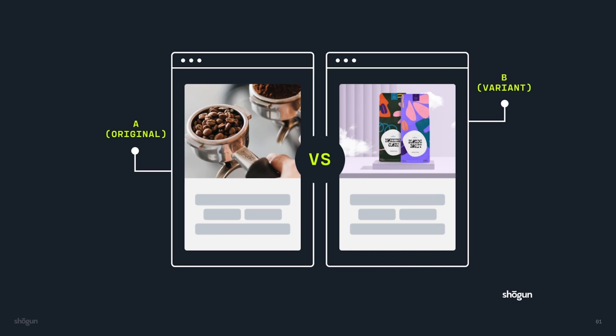It sounds simple, right? Because it is. And without A/B testing, you're basically guessing what works best for your store. But with it, you can make data-driven decisions to optimize your site for more revenue. A/B testing can help tackle a whole host of obstacles that directly affect a store's profitability, including high shopping cart abandonment rate, high customer acquisition cost, and high bounce rates. Most importantly, it gives you actual data on what drives customers to click and purchase. You're taking the guesswork out of your website design choices, so you're confident your store is designed to drive sales.